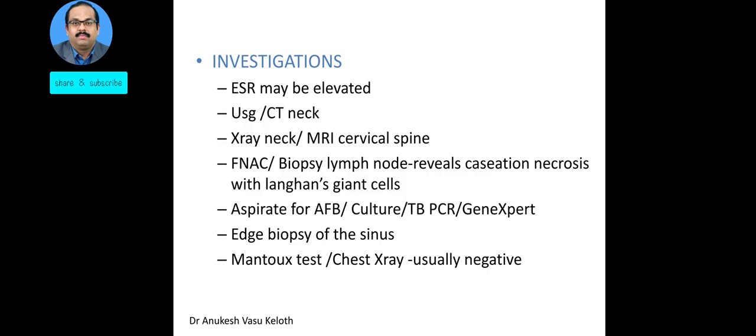Regarding investigations: a complete blood count with ESR will frequently show an elevated ESR, though the total count may not be elevated. An ultrasound or CT scan of the neck will reveal the collection and status of the nodes. An X-ray of the neck or MRI of the cervical spine must be done to rule out tuberculosis of the spine. For the swelling, an FNAC may be done initially, and if negative or inadequate, an excision biopsy may be planned. When taking the excision biopsy, a specimen should be sent for histopathological examination as well as TB-PCR or GeneXpert for rapid diagnosis.